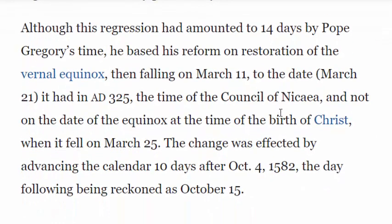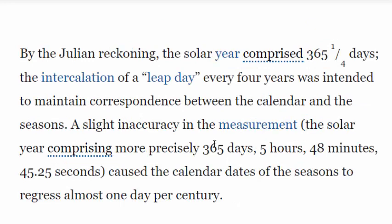That wobble effect caused a problem for Pope Gregory in 1582 because his equinoxes were already off. According to Britannica.com, by the Julian reckoning the solar year comprised 365 and a half days, and it also had leap years where they add a leap day every four years. A slight inaccuracy in the measurement caused the calendar dates of the seasons to regress almost one day per century.